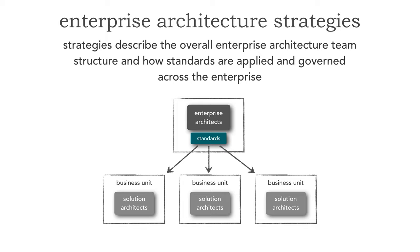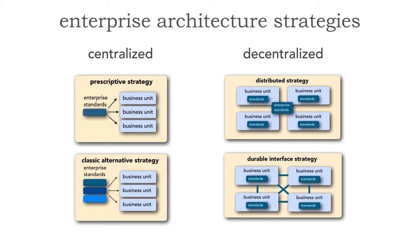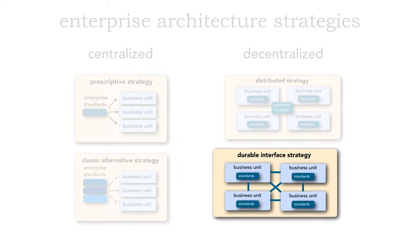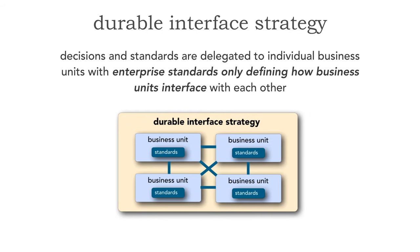As we saw in lesson 62, the strategies describe the overall enterprise architecture team structure — whether it's centralized or distributed — and also how standards, whether they be technology, architecture, methodology, or process-based, are applied and governed across the enterprise. There were four basic strategies of enterprise architecture: the prescriptive, classic, classic alternative, the distributed, and the durable interface. In this lesson we're actually going to take a look at the durable interface strategy.